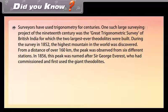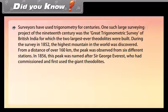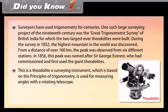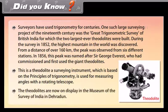Surveyors have used trigonometry for centuries. One such large surveying project of the 19th century was the Great Trigonometric Survey of British India, for which the two largest theodolites were built. During the survey in 1852, the highest mountain in the world was discovered from a distance of over 160 kilometers, observed from six different stations. In 1856, this peak was named after Sir George Everest, who had commissioned and first used the giant theodolites. A theodolite is a surveying instrument based on the principle of trigonometry, used for measuring angles with a rotating telescope. The theodolites are now on display in the museum of the Survey of India in Dehradun.